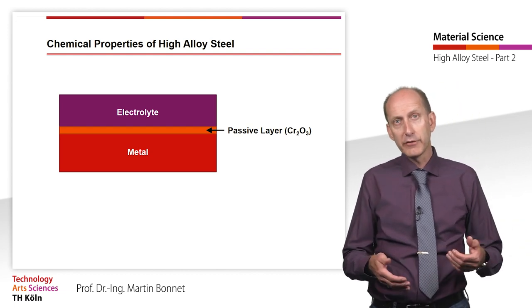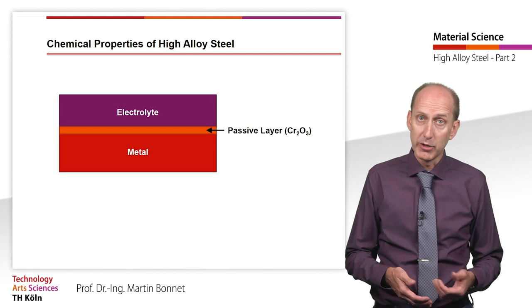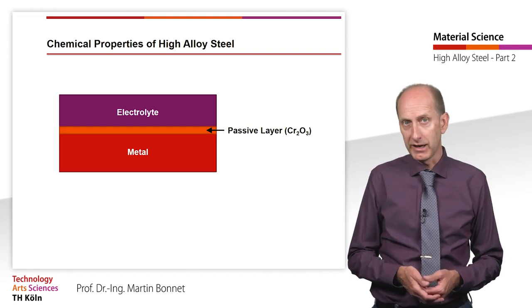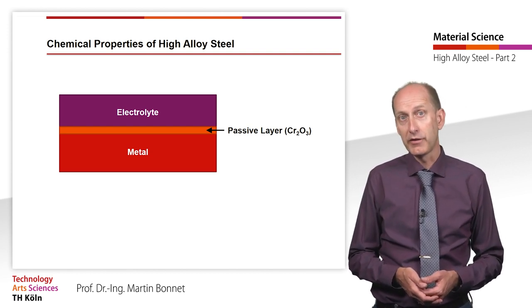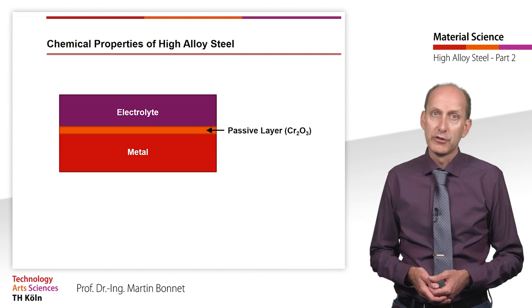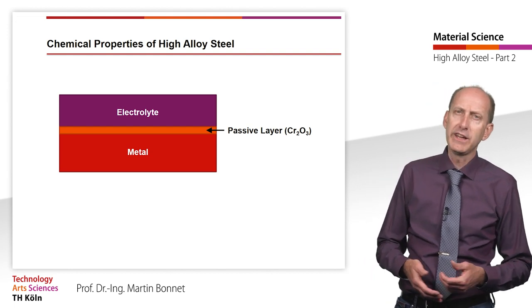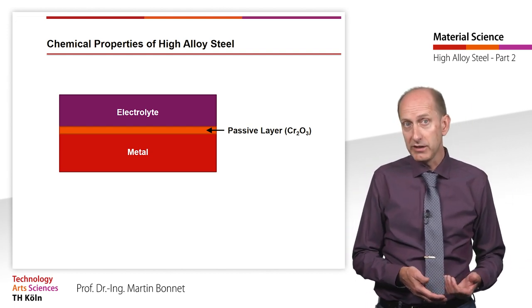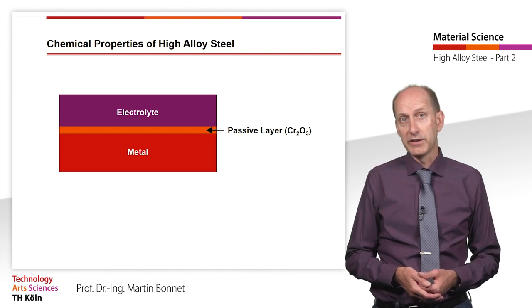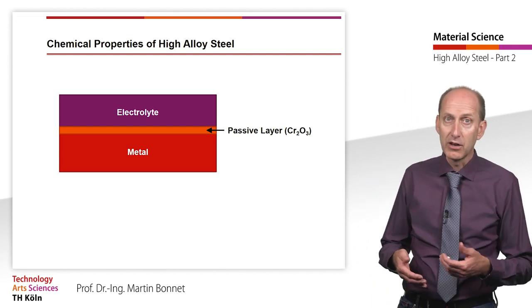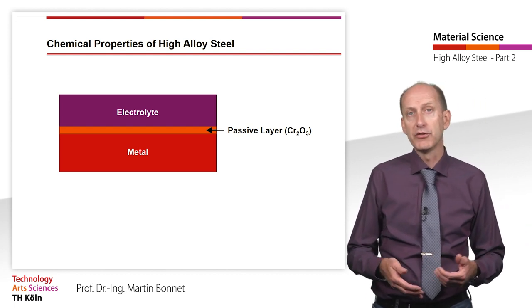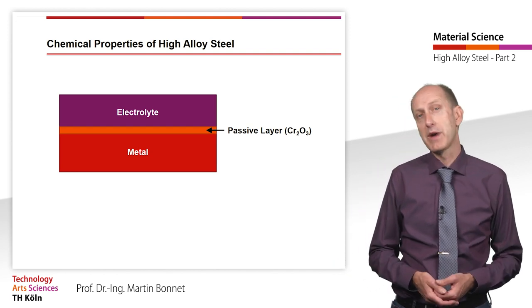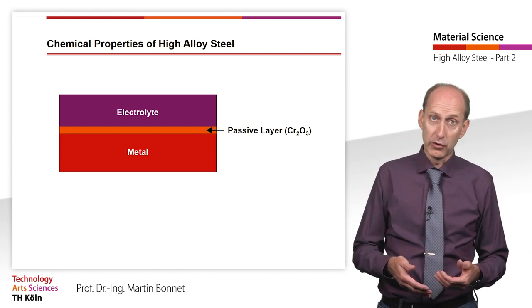The passive layer consists mainly of chromium oxide, with oxides of other alloying elements if any are present. The resistance of stainless steel is determined by the stability of their passive layer — that is to say, by the exact alloy composition, the surface condition and the microstructure.